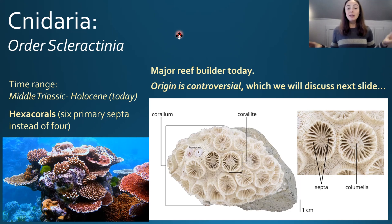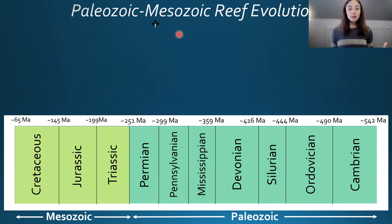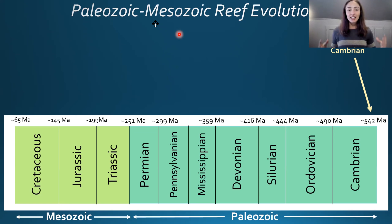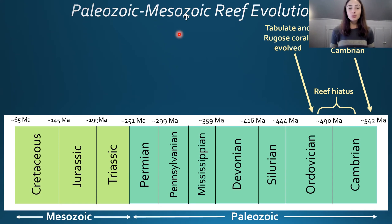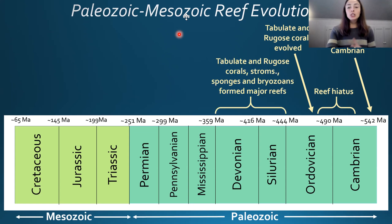Corals and reef-building organisms have gone through dramatic changes throughout the Paleozoic and Mesozoic. First, archaeocyathan reefs existed in the early Cambrian but went extinct by the middle Cambrian, causing a reef hiatus through the early Ordovician. Then tabulate and rugose corals evolved in the early to middle Ordovician, allowing reefs to proliferate again in the Silurian and Devonian alongside stromatoporoids, sponges, and bryozoans.